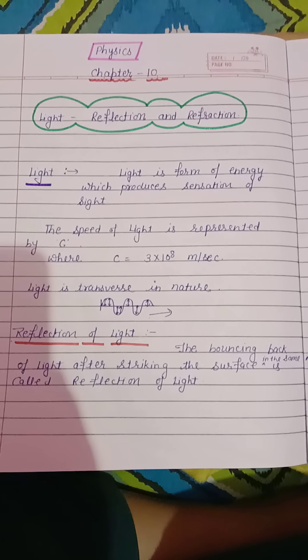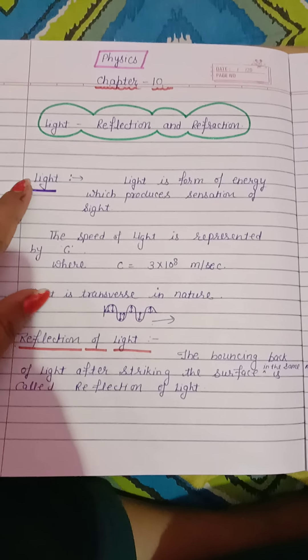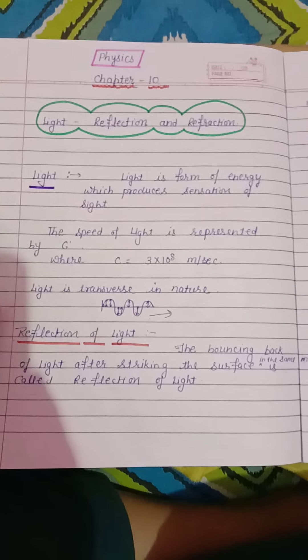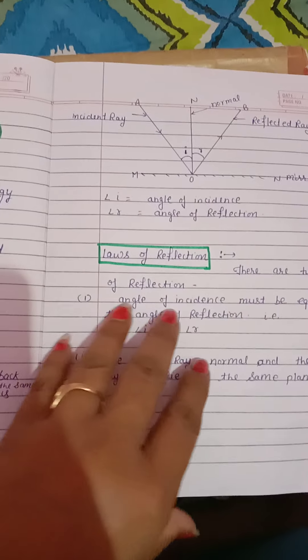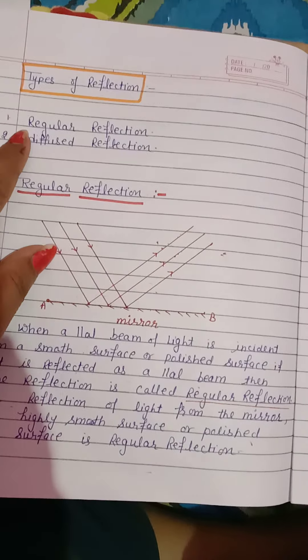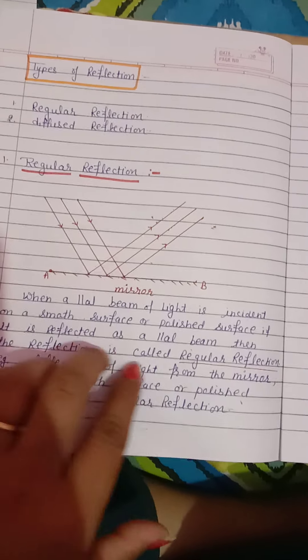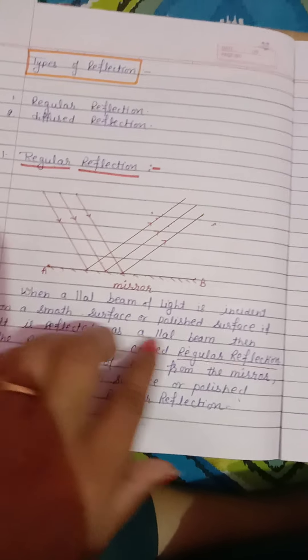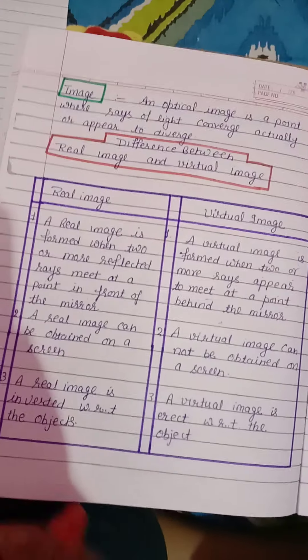I hope you all are well. Yesterday we studied about light, reflection of light, laws of reflection, types of reflection — regular reflection and diffused reflection — and their definitions. Today we are studying about the image.